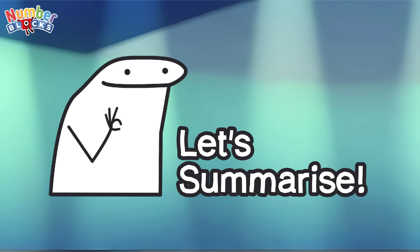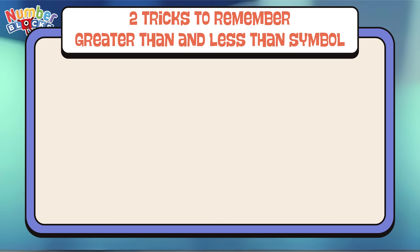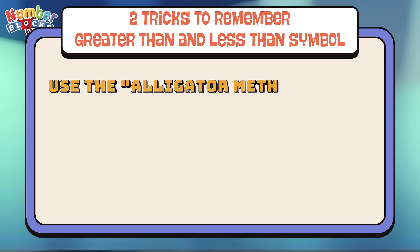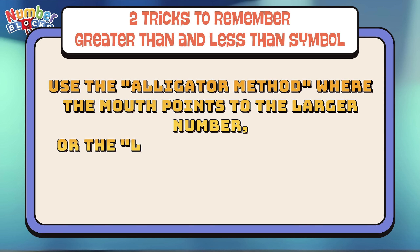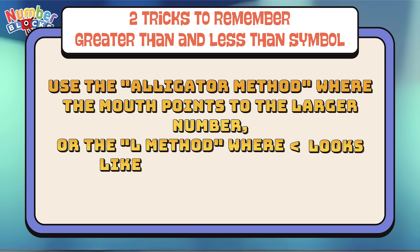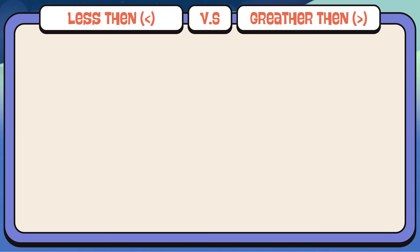Join me and let's summarize. Here are the two tricks to remember greater than and less than symbols: Use the alligator method, where the mouth points to the larger number. Or the L method, where the less than symbol looks like an L for less than. Let's check out some examples of less than versus greater than.